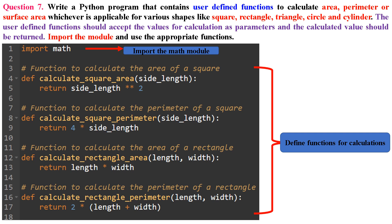From lines 4 to 34, a series of user-defined functions are defined, each corresponding to a specific shape's calculations. In lines 4–5: calculate_square_area(side_length) calculates the area of a square using side_length**2. In lines 8–9: calculate_square_perimeter(side_length) calculates the perimeter as 4 * side_length, since a square has 4 equal sides. In lines 12–13: calculate_rectangle_area(length, width) calculates the area as length * width. In lines 16–17: calculate_rectangle_perimeter(length, width) calculates the perimeter as 2 * (length + width), summing the lengths of all four sides.